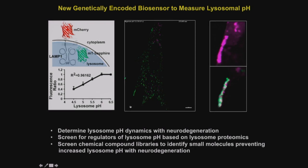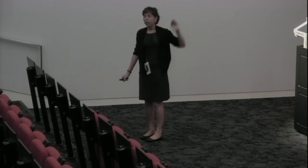We want to use this biosensor to: first, accurately measure lysosomal pH in neurodegeneration — it really hasn't been done. Second, it's going to be a terrific screening tool, because beyond the V-ATPase, we don't know what regulates lysosomal pH. There may be a chloride channel or a calcium-proton exchanger, but we really don't know. Based on lysosomal proteomics, we'll use it with a CRISPR screen of lysosome membrane proteins. And we're really excited to test whether, if lysosomal pH increases in a neurodegenerative cue, we can block that with a chemical compound — so we'll be screening a chemical compound library.